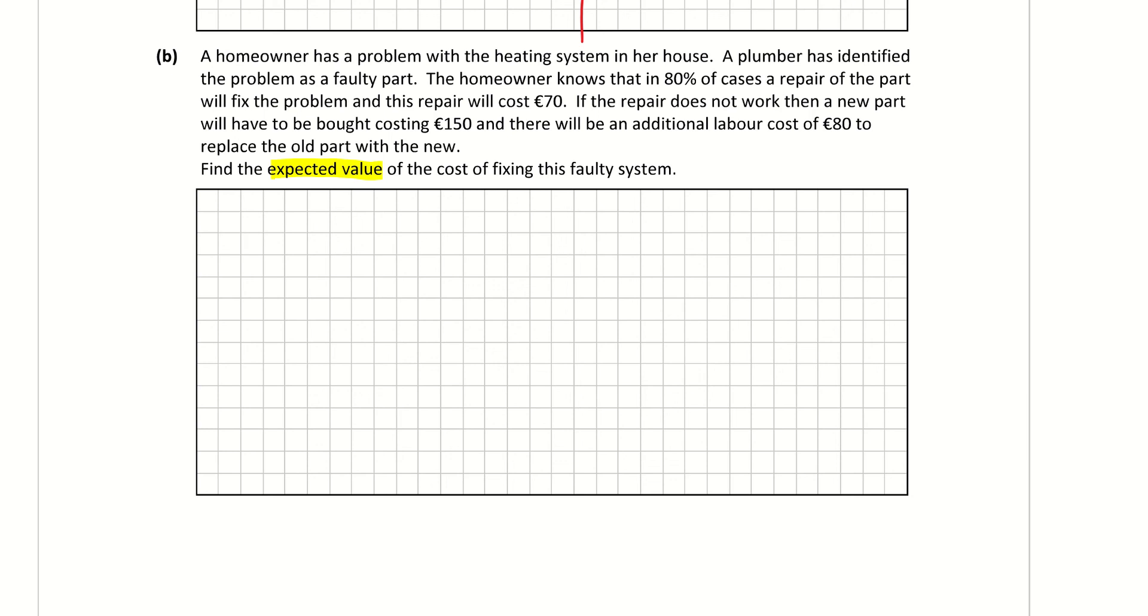So it's a text heavy question there, but I don't think there's too much to it. So let's look at the first part. If we focus in on the initial repair, which costs €70, and in 80% of the time, it's going to be fixed. So that is, 80% is 0.8 when I divide it by 100, and I multiply that by my €70. So expected value is found by just multiplying the value by the probability of it happening.